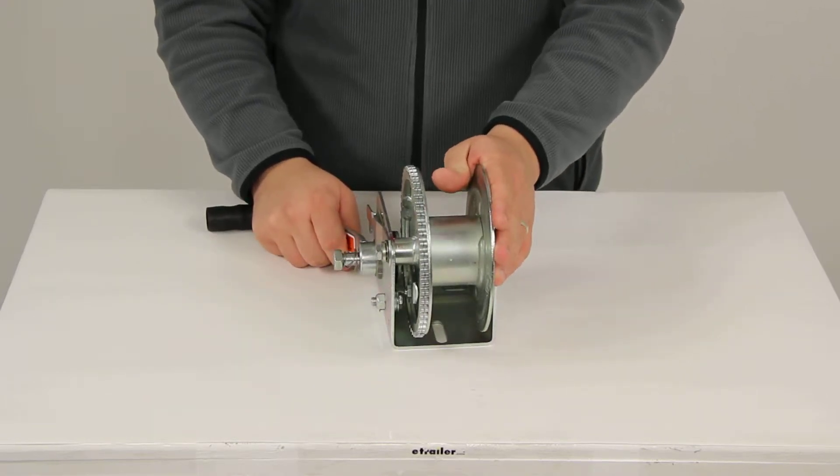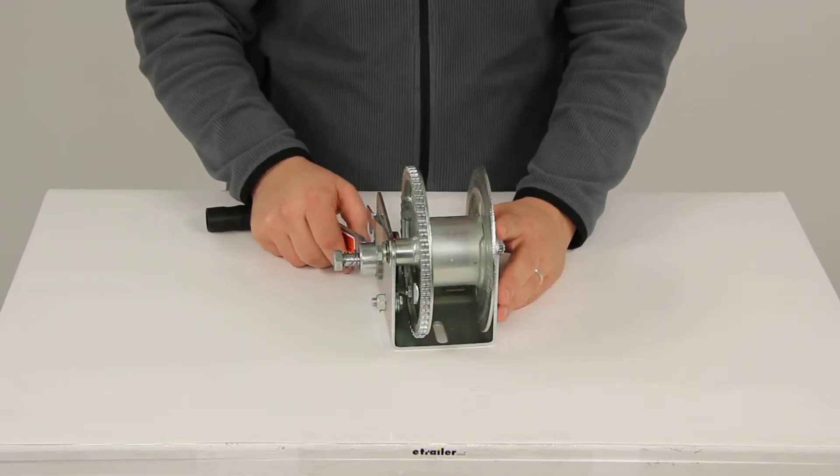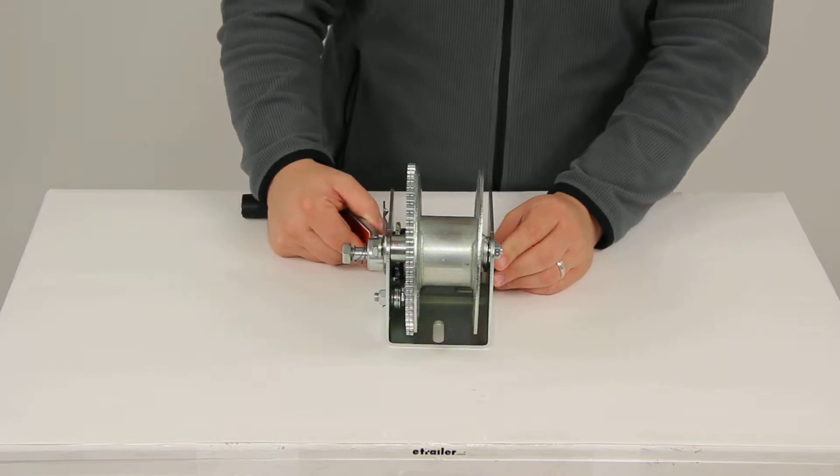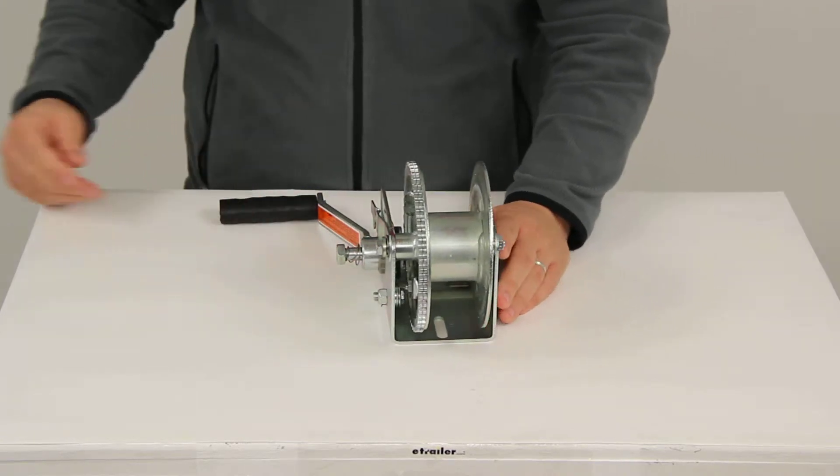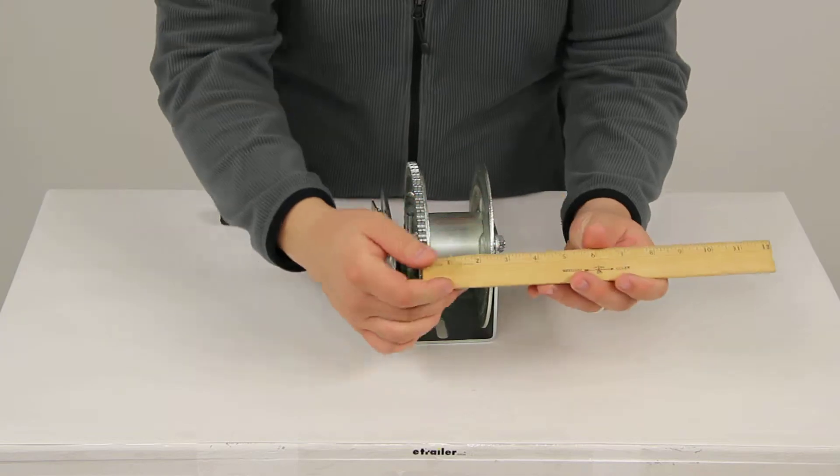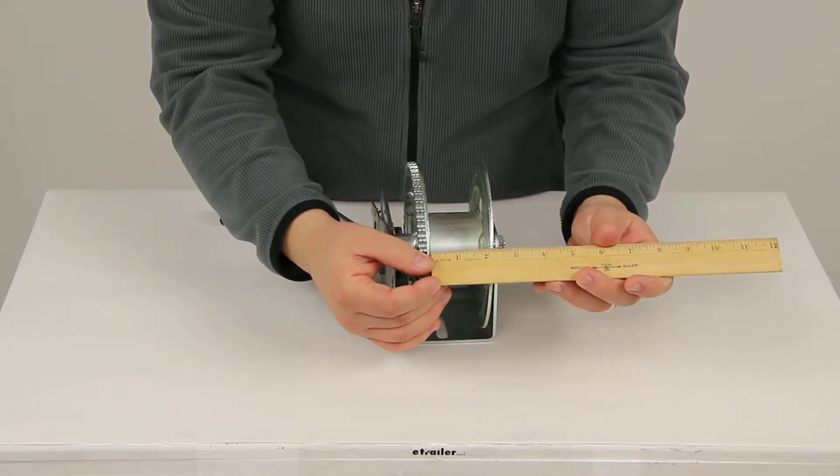The drum hub capacity when using a cable is going to be 7/32nds of an inch in thickness up to 69 feet in length. When using a strap you're going to be able to have 31 feet in length and 2 inches in width.